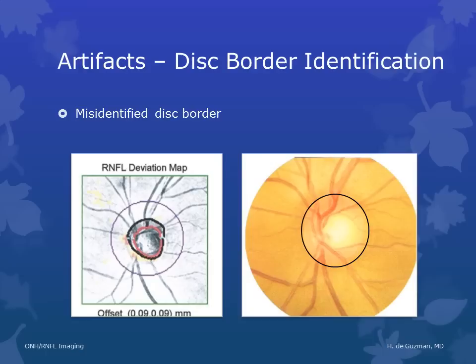One advantage of the spectral domain Cirrus OCT over the older time domain technology is that it does not require the technician to identify the disc border manually — it uses an algorithm. But sometimes that algorithm fails and you can have misidentification of the disc border. On the OCT RNFL deviation map, the black line represents where the machine thinks the disc border is. When you see a misidentified disc border, all parameters that depend on disc border identification — such as disc area and cup-to-disc ratios — are not reliable anymore. You have to make sure the disc border was identified correctly.